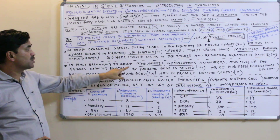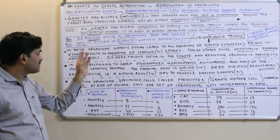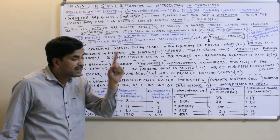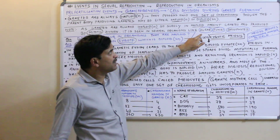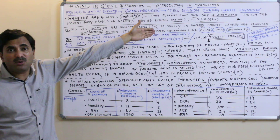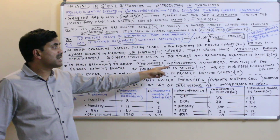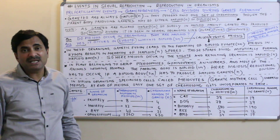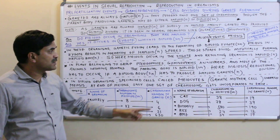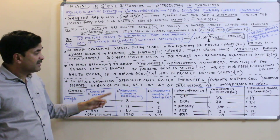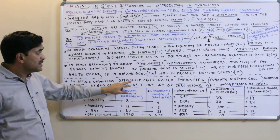In plants belonging to groups like pteridophytes, gymnosperms, and angiosperms, and in most animals including humans — all higher organisms — the parent body is diploid. Since gametes must be haploid, these organisms must undergo meiosis. So here meiosis, which is the reduction division, occurs in the diploid body to produce haploid gametes.